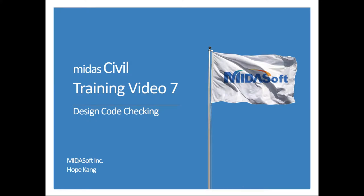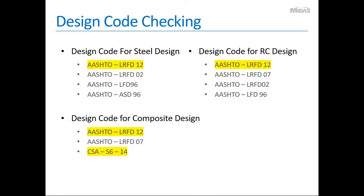Hi everyone, welcome to the seventh training video. In this video we will cover the design code checking process and we will finally generate design code checking output in Excel. Design code checking capabilities for steel, RC (reinforced concrete), and composite designs are embedded in Midas Civil.